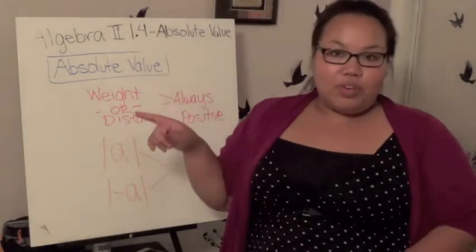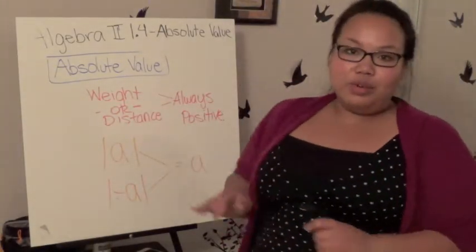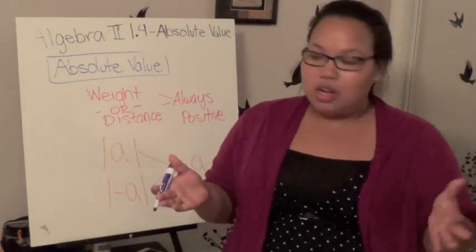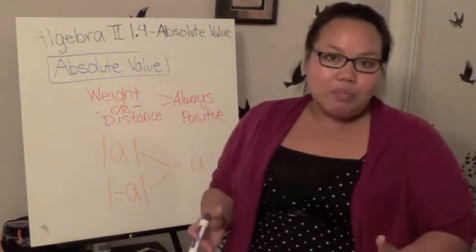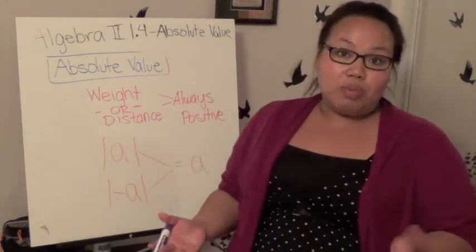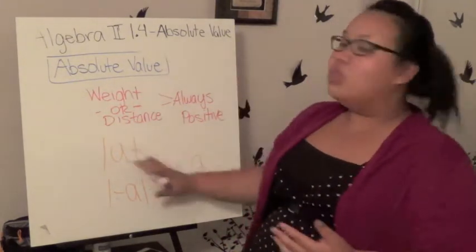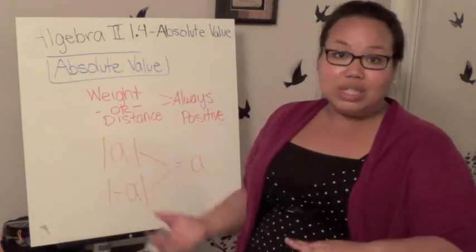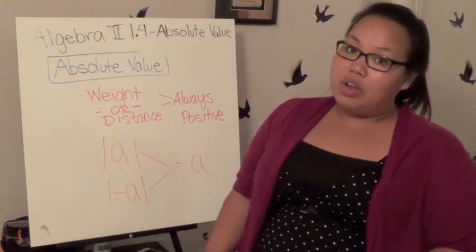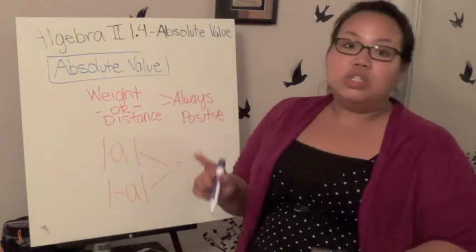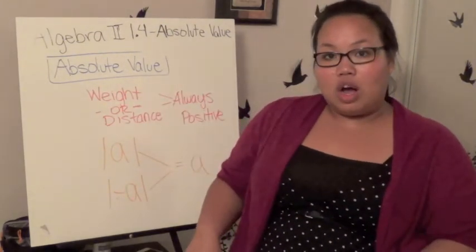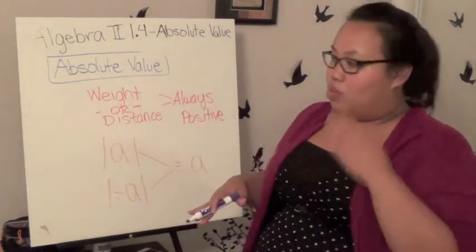Today we're covering Algebra 2 section 1.4, which is absolute value. Absolute value is something you might have seen in middle school, but maybe not. It's a fairly simple concept, but there can be many challenging problems. This is our only notes, then we're going straight to examples. Make sure you follow the examples very closely and write down notes either before or after I talk on each segment, not while I'm talking.